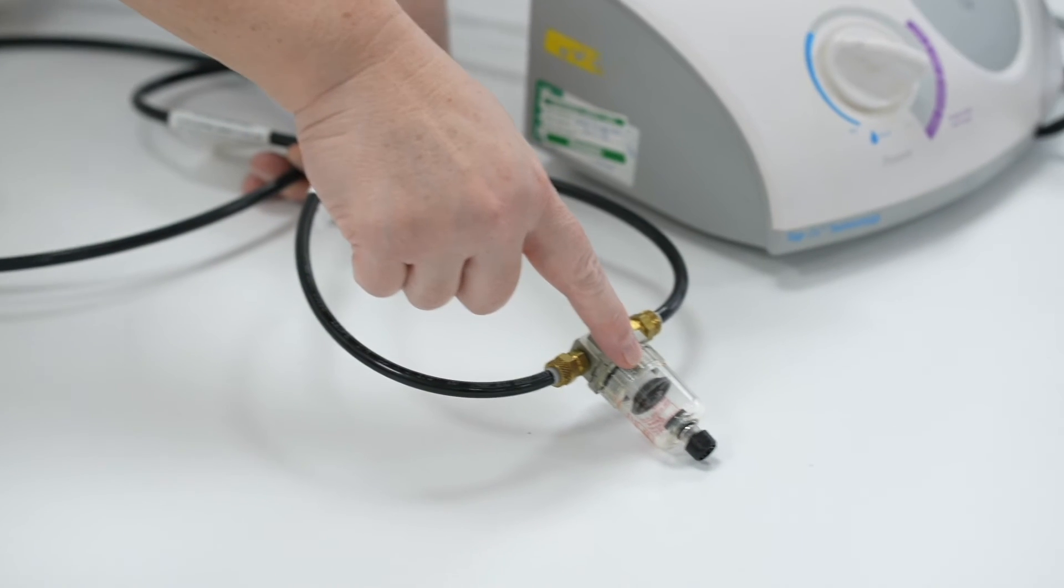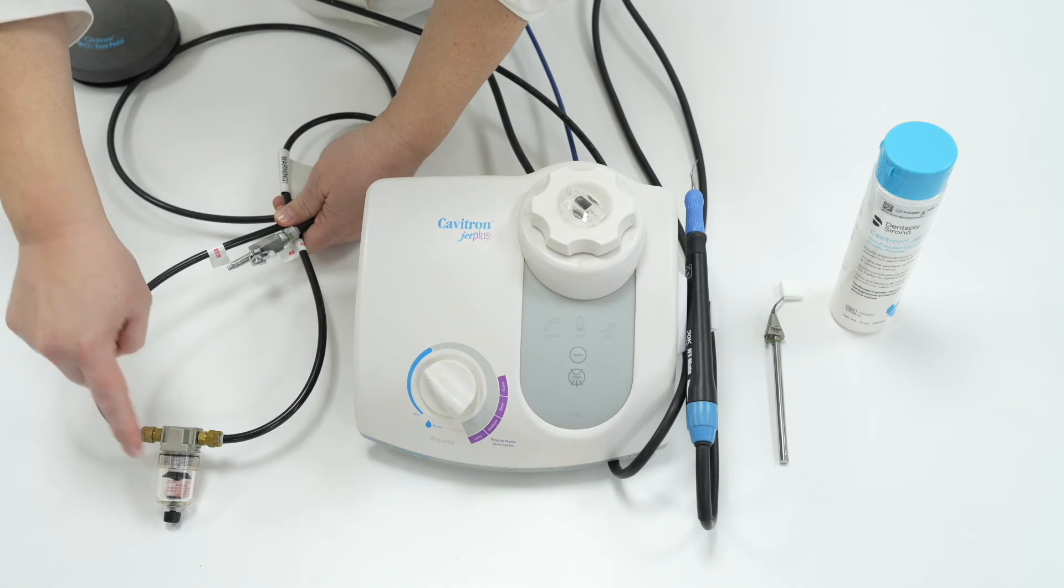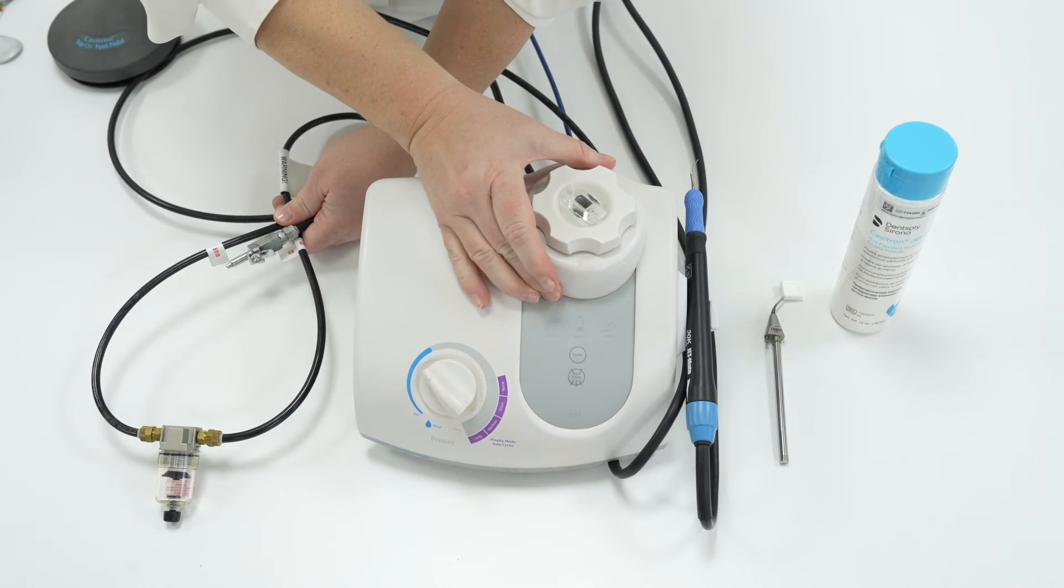If you ever see water in the air line clear pot or in the powder pot, this means that the air and water line has been mixed up and the Cavitron has been accidentally flooded.